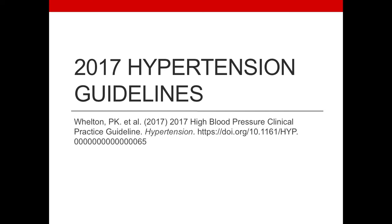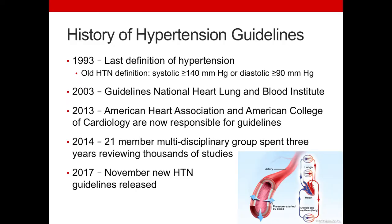In this mini lecture we'll be going over the new guidelines for hypertension that were released in November of 2017. First, a brief history of the hypertension guidelines. The last definition of hypertension was developed in 1993 and that was systolic equal to or over 140 with diastolic being equal to or over 90 for someone to be diagnosed with hypertension.